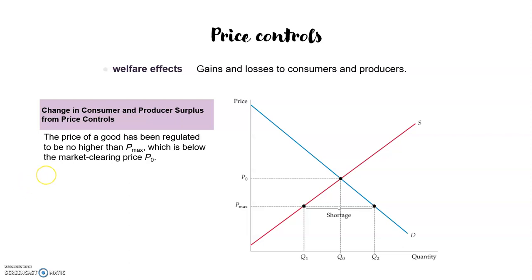In this slide we are looking at the maximum price, which is below the market clearing price. The market clearing price will be p0, and our new price — being a maximum price or a ceiling price — will be below this market clearing price. This is going to affect the quantity demanded and the quantity supplied in the market.